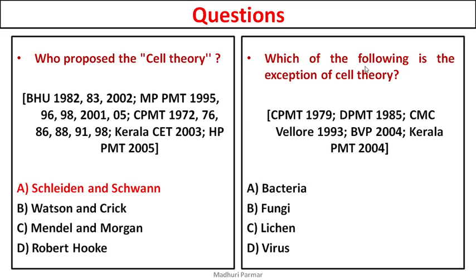Next question: which of the following is an exception to the cell theory? The exceptions we have studied include virus, bacteria, fungus, and lichen. Lichen is the symbiotic relationship between algae and fungus. The answer is virus, because virus is not a living thing until and unless it enters a host, which is why it is not included in cell theory — it is not a proper cell or proper living thing.